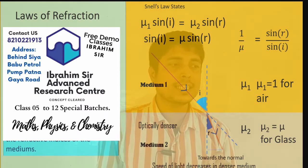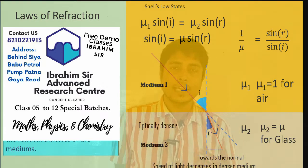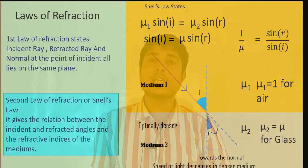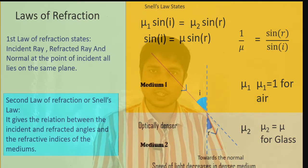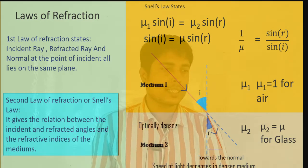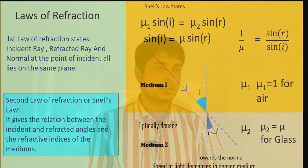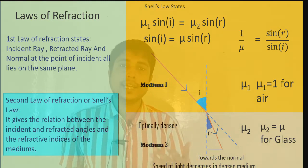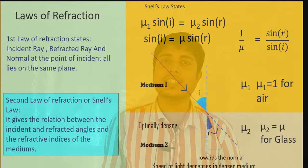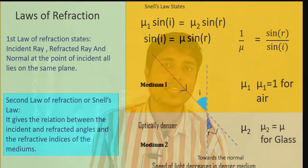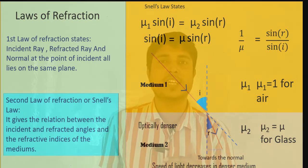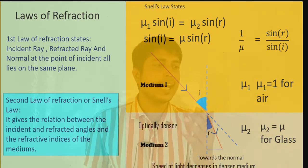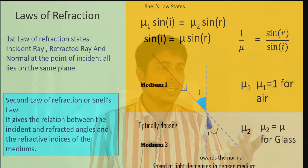So what happens when light is incident on the surface of a transparent surface? If light is incident on a transparent surface — it can be water, it can be a glass slab — let's consider a transparent surface. It has a refractive index, and its refractive index will be higher than the refractive index of air.